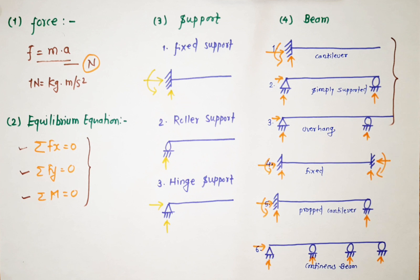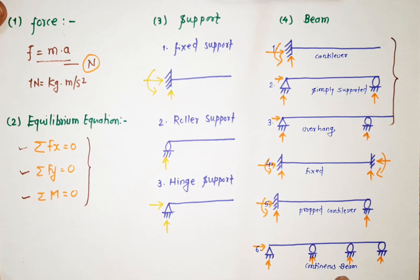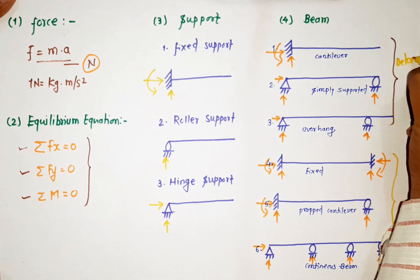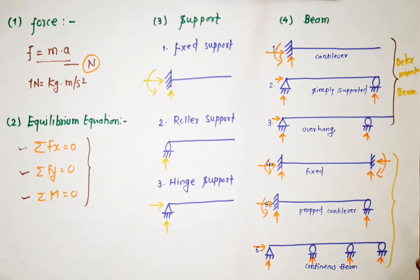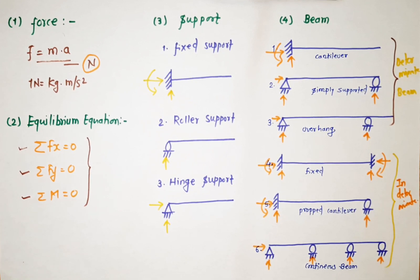These beams — cantilever, simply supported, and overhang — are called statically determinate beams because we can solve them with equilibrium equations. However, fixed beam has six unknowns, propped cantilever has four, and continuous beam has five. We cannot solve these with equilibrium equations alone, so they are called statically indeterminate beams.